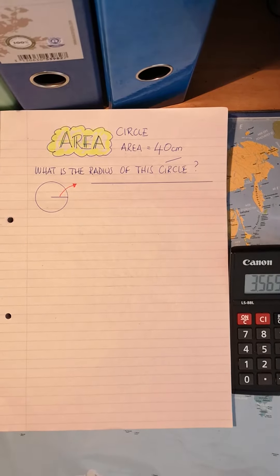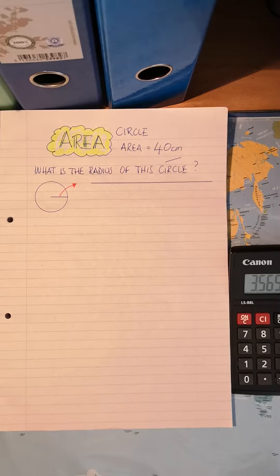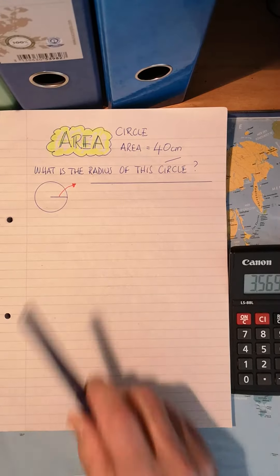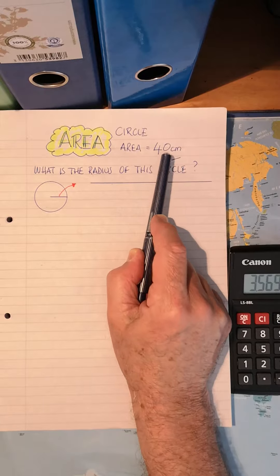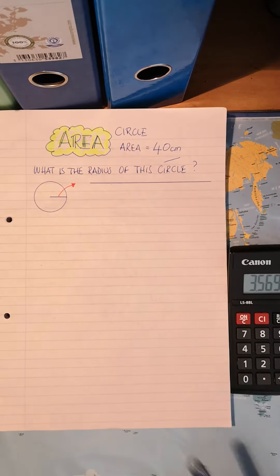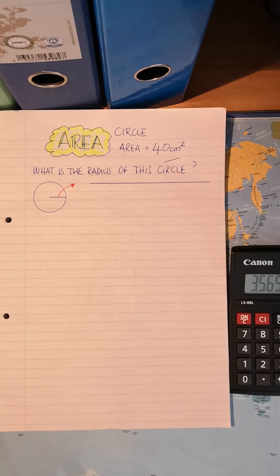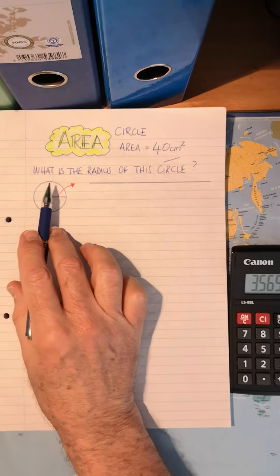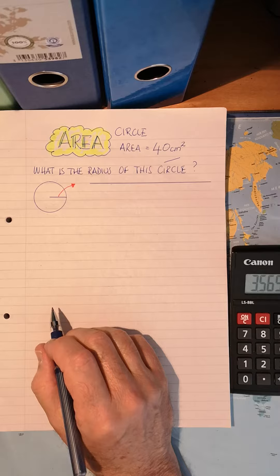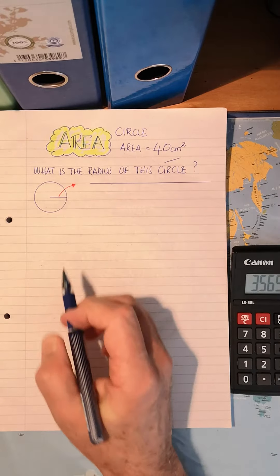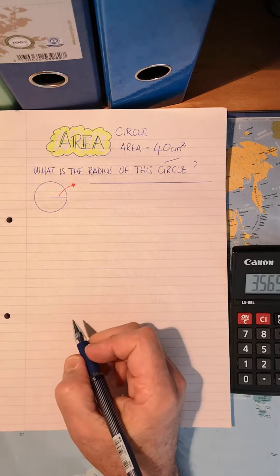Now that we've learned how to work out the area of a circle, they sometimes ask us exactly the opposite. They give us the area of the circle, and in this case it's 40 centimeters squared. So they've given us the area, and they want to know what is the radius of this circle. In other words, this measurement. What is that measurement when they've given us the area?